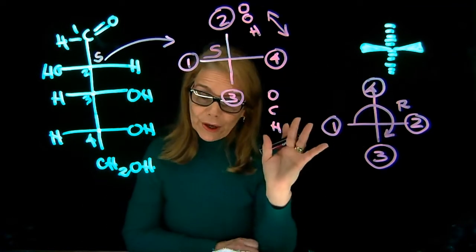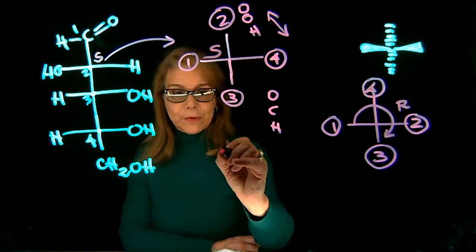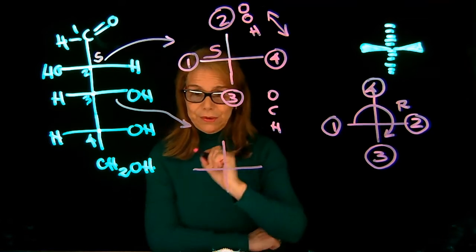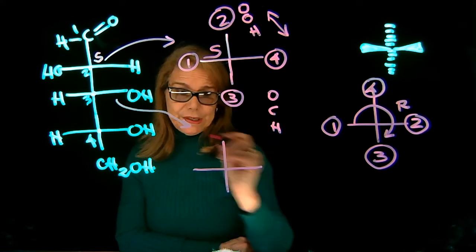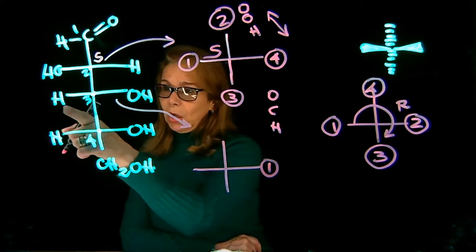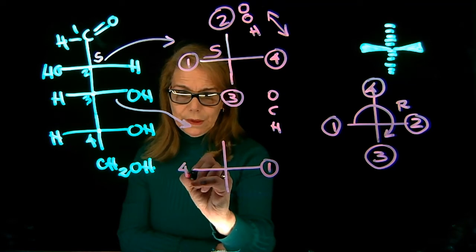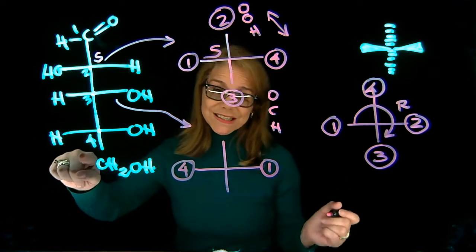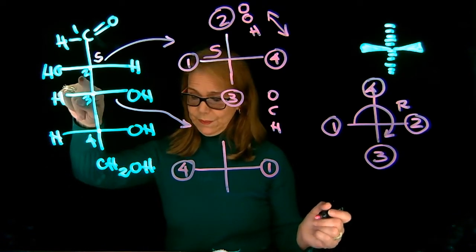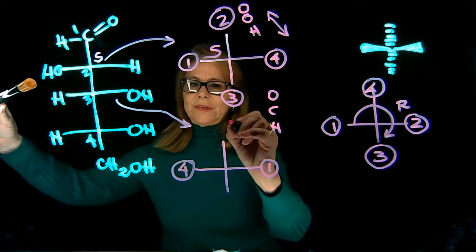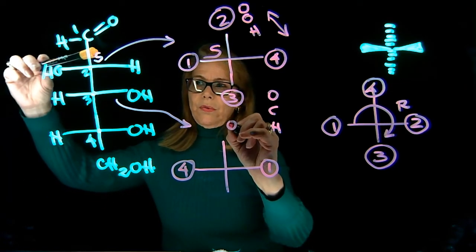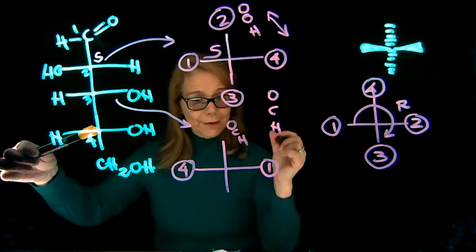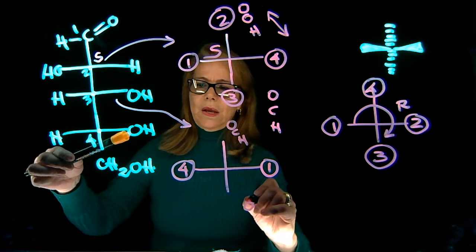Now let's do carbon 3 using the same strategy. For carbon 3, my highest priority is the OH, number 1. Then the lowest priority is hydrogen, number 4. Then I am between carbon 2 and carbon 4. Carbon 2 is attached to oxygen, to a carbon, and to hydrogen. Carbon 3 is attached to oxygen, carbon, carbon, and hydrogen. So it is a tie.